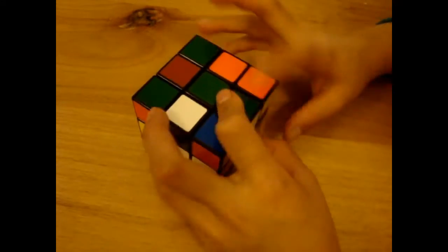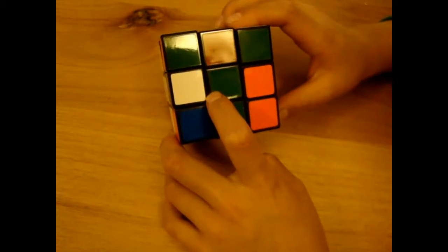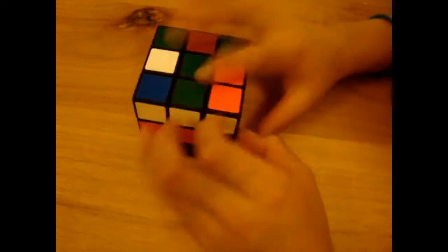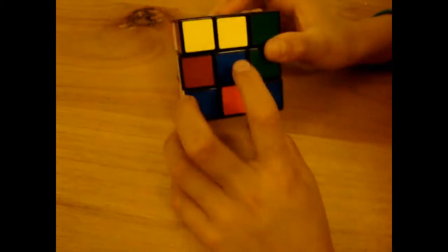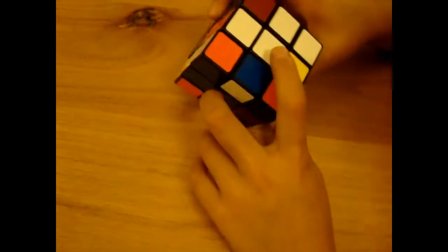What's cool about the 3x3, the middle one is always that color. So that's the green, orange, blue, dark red, white, and of course yellow.